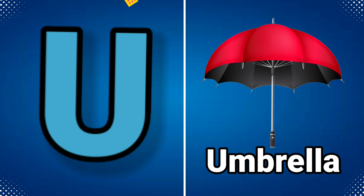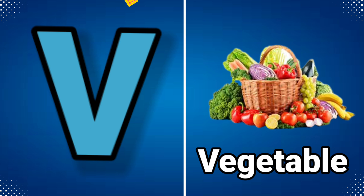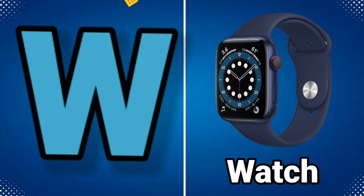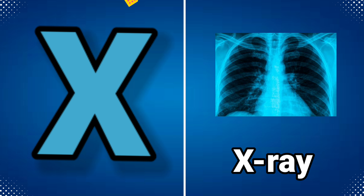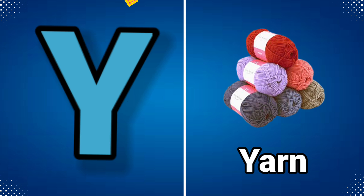U for umbrella, V for vegetable, W for watch, X for x-ray, Y for yarn.